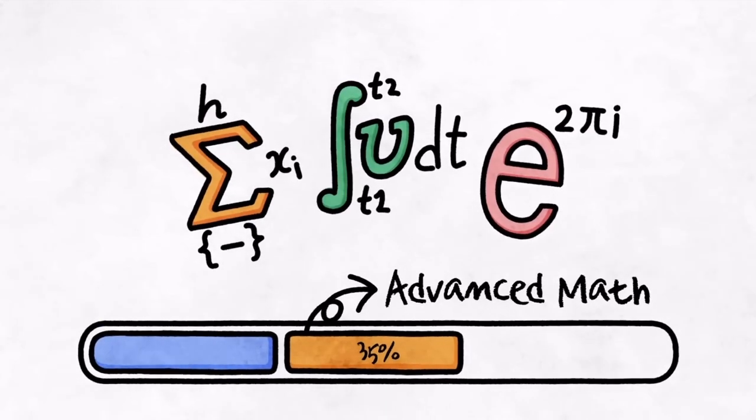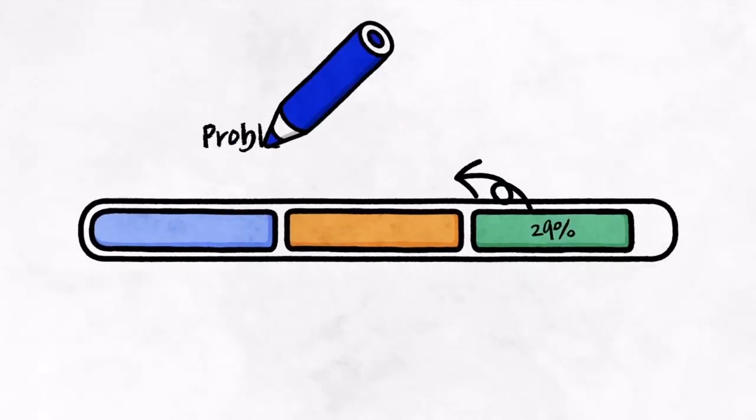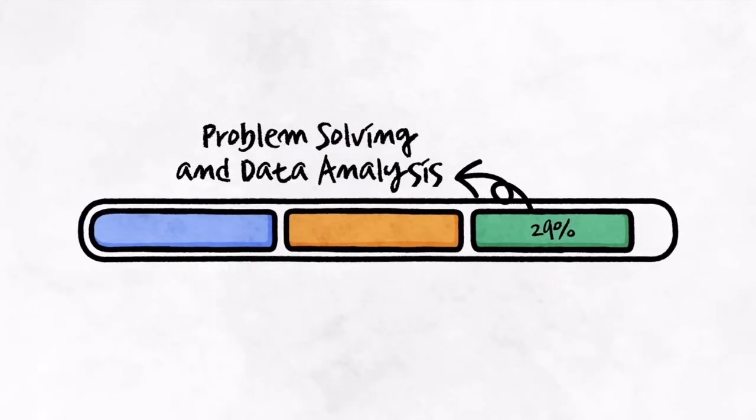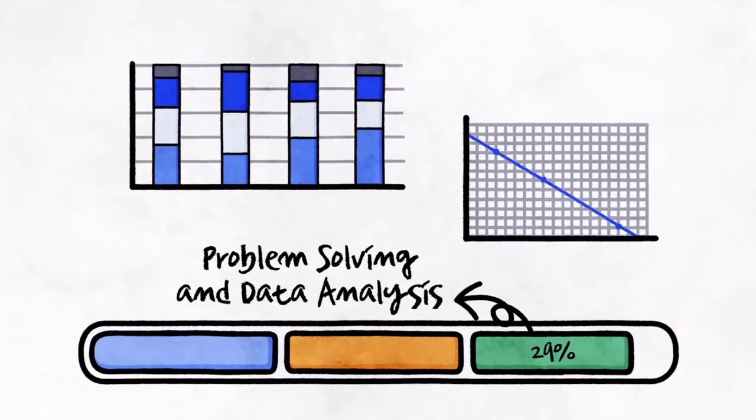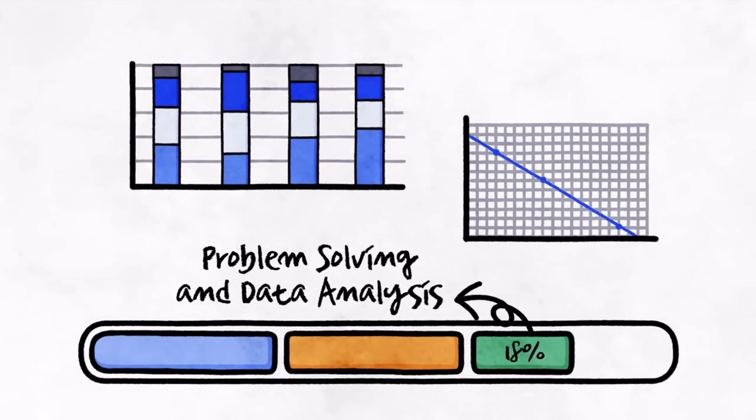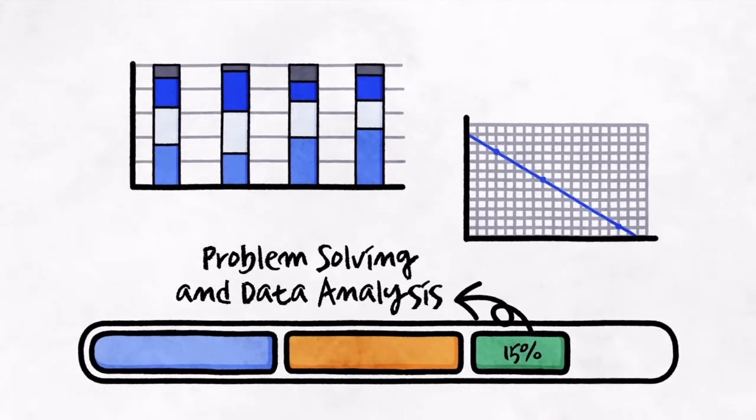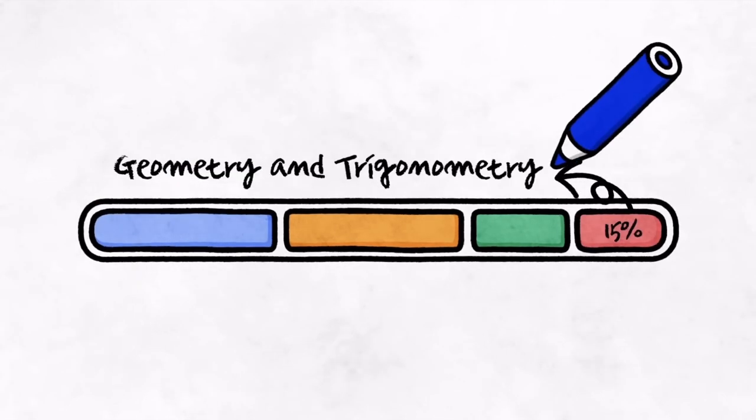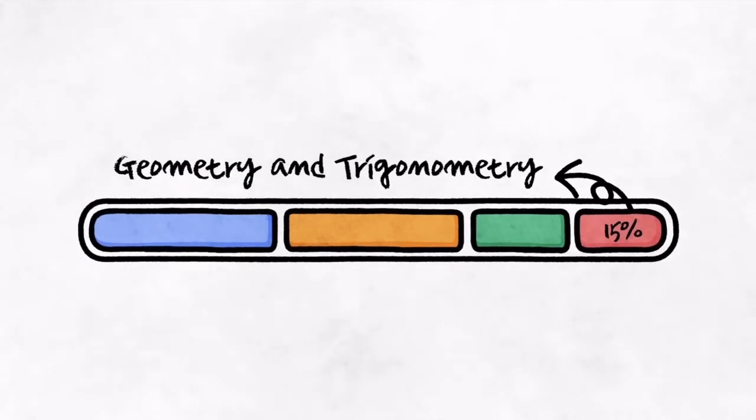As mentioned, problem solving and data analysis changed the most in terms of frequency. What used to be 29% now only makes up 15% of the test. The reduction is most likely due to the overall shortening of the questions. Finally, the geometry and trigonometry category is 15% of the test.